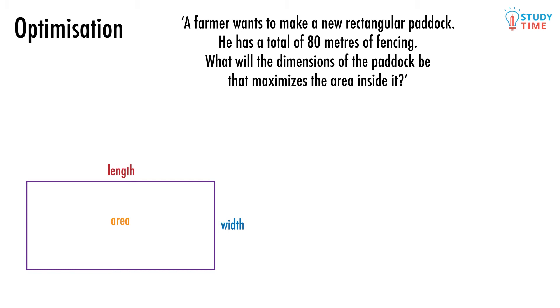Great. Now that we've also been told that the total length of fencing that the farmer has is 80 meters, we can update our diagram using that information. Since the two lengths are the same and the two widths are the same, the length plus the width will add to 40 meters. So if length plus width equals 40 meters, then we can rearrange this to be width equals 40 minus length. Let's use this to update our drawing.